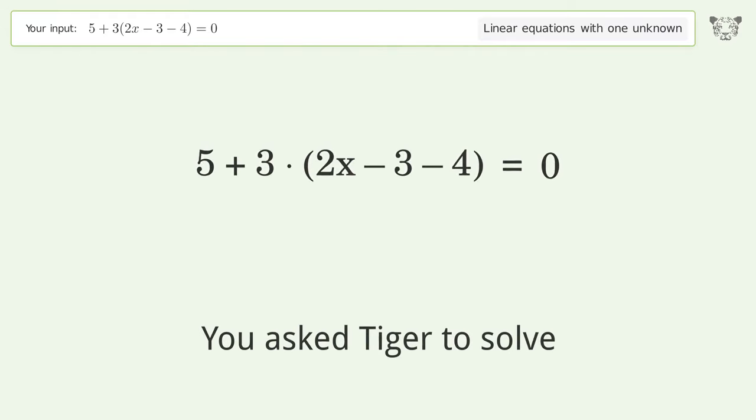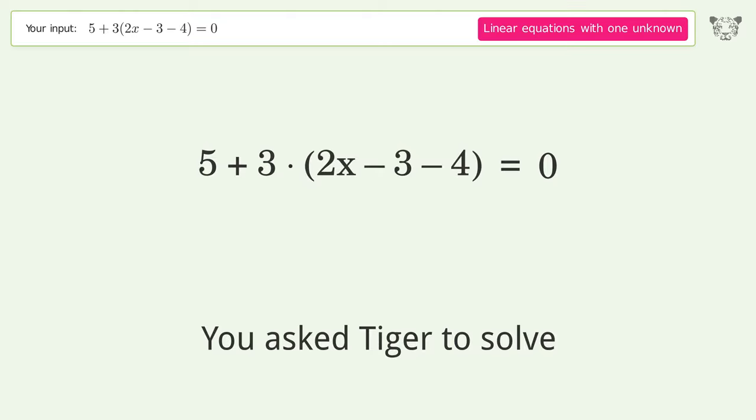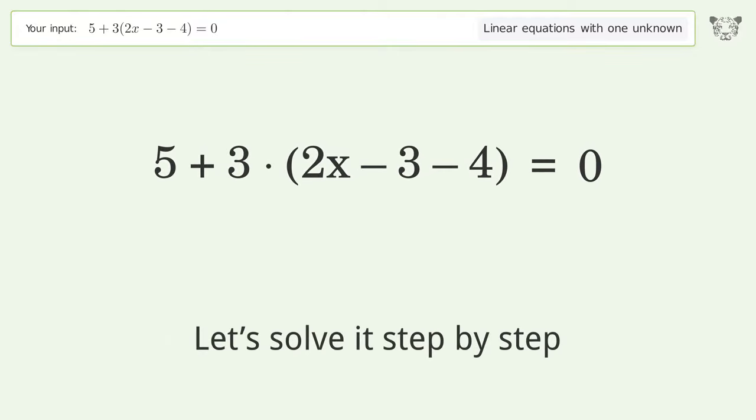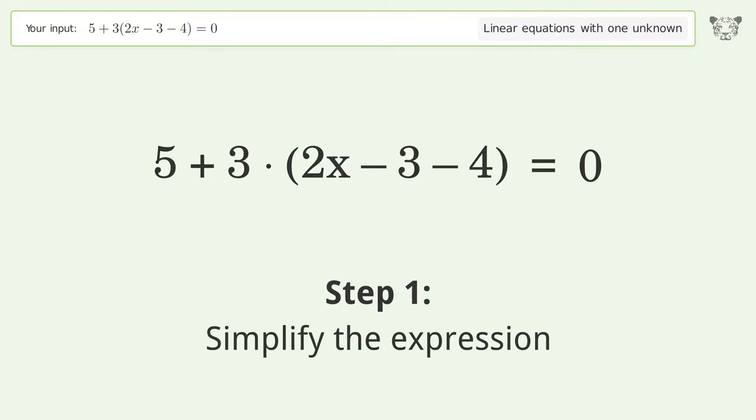You asked Tiger to solve this. It deals with linear equations with one unknown. The final result is x equals 8 over 3. Let's solve it step by step. Simplify the expression.